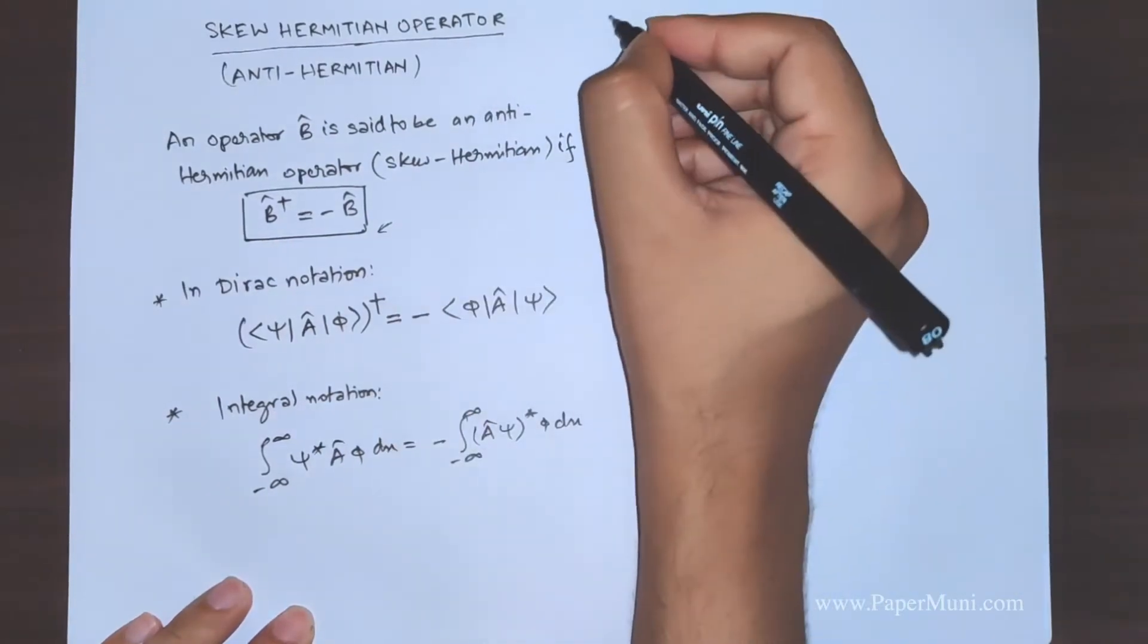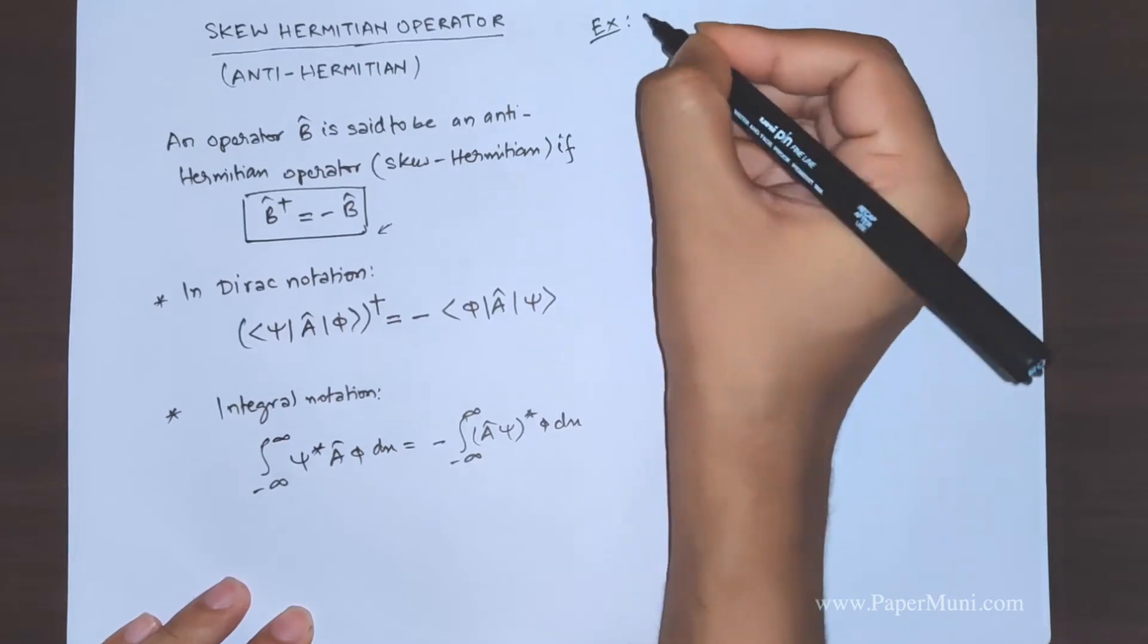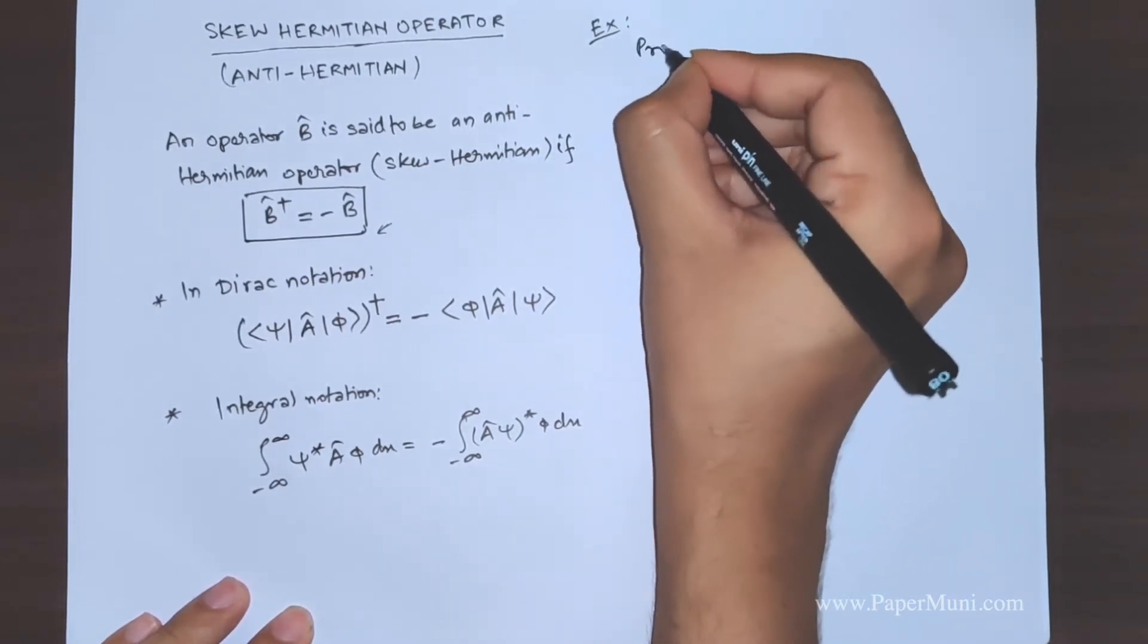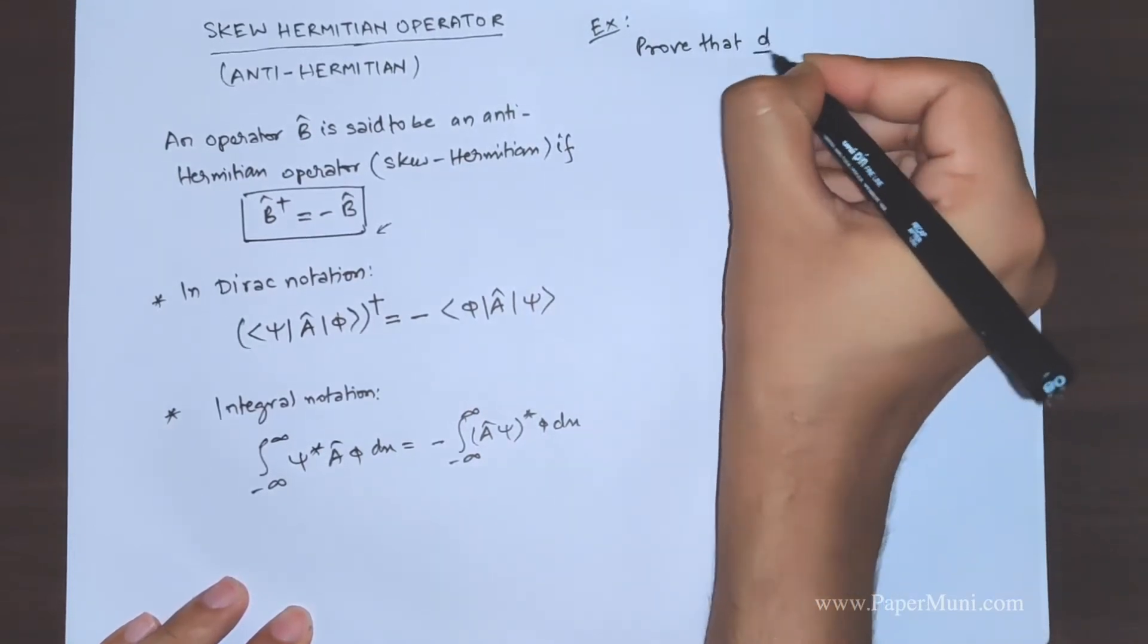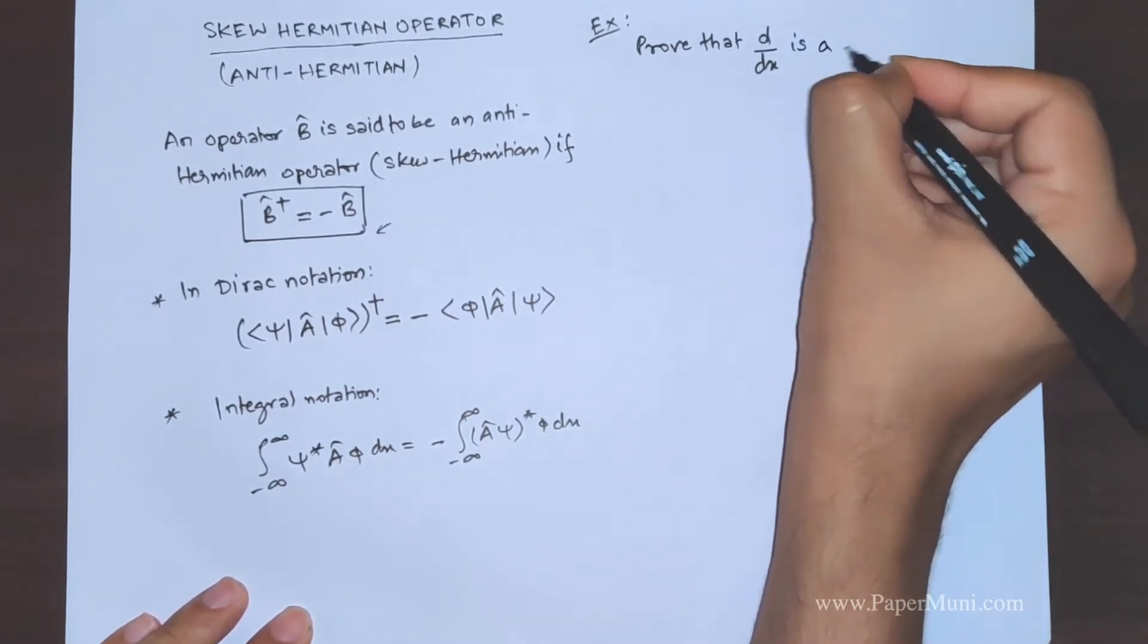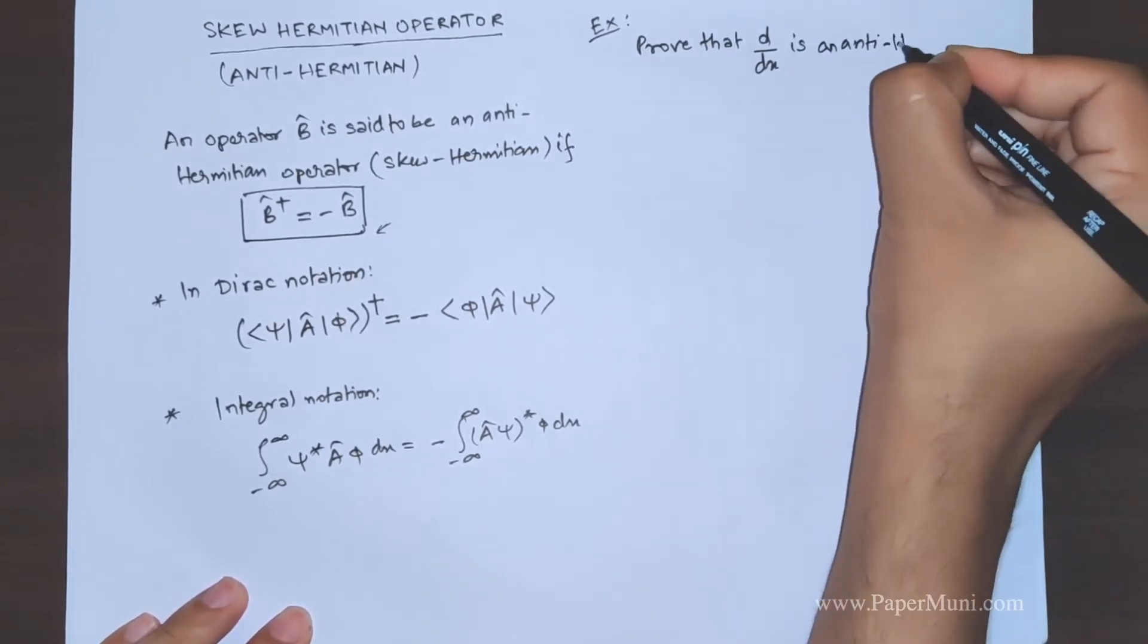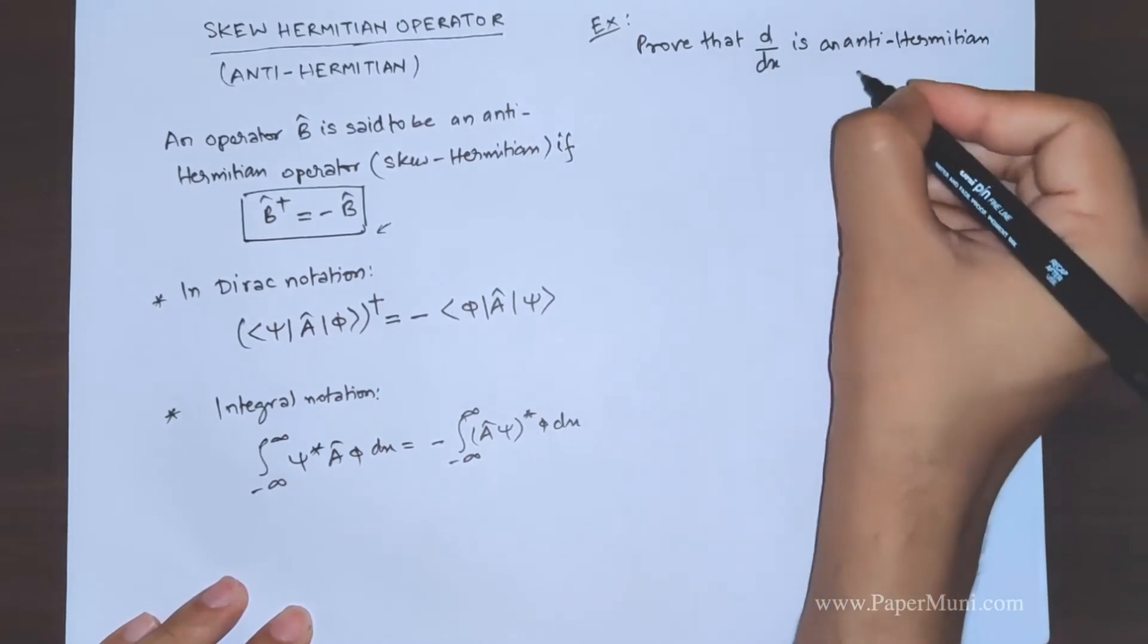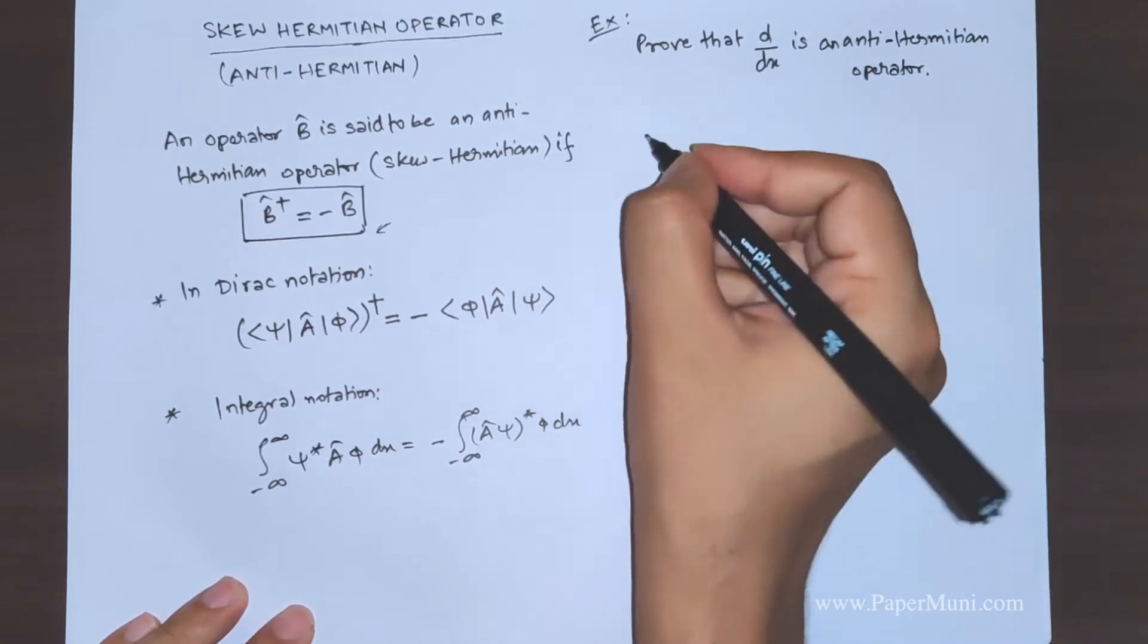Now the question is we'll take an example. Question is prove that d/dx, this operator, is an antihermitian operator.